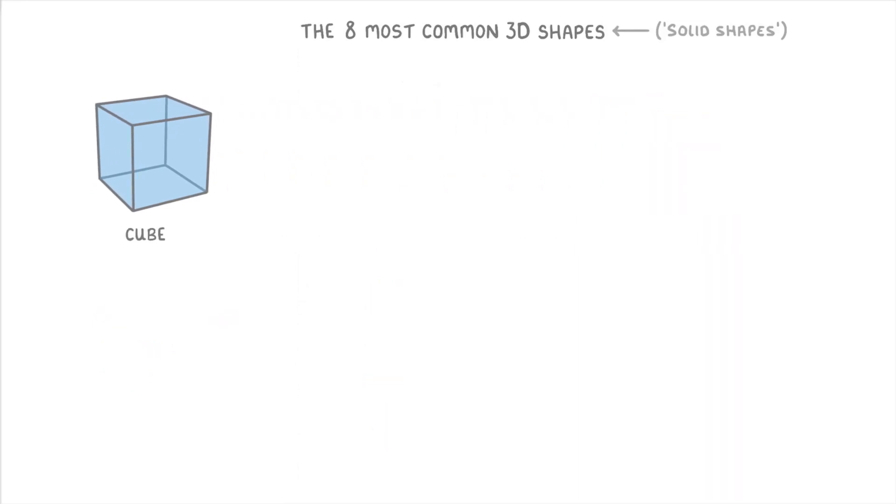If we move the cube over, the other 3D shapes that you need to know are the cuboid, which is like a cube but has been stretched out because it can have rectangular faces rather than all square faces.